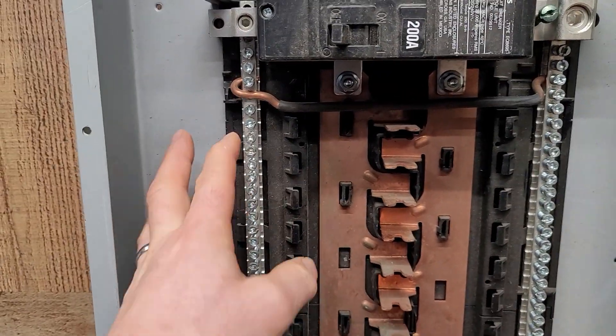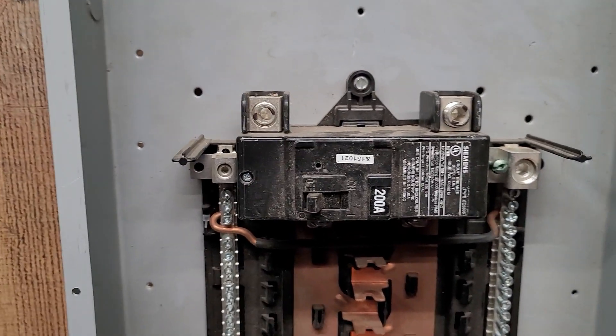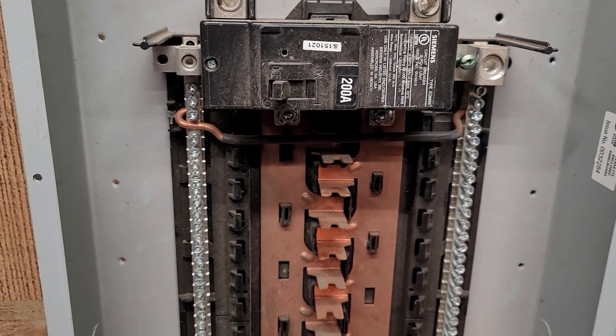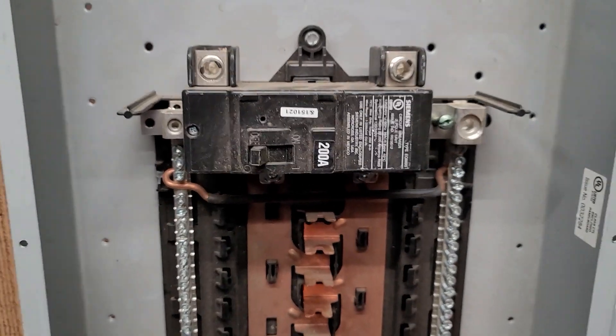So ultimately what you want to make sure that you do is that you separate the grounds and neutrals if you're past that first point of disconnect in your system and to make sure that you still bond the frame of your can when you're doing all this.